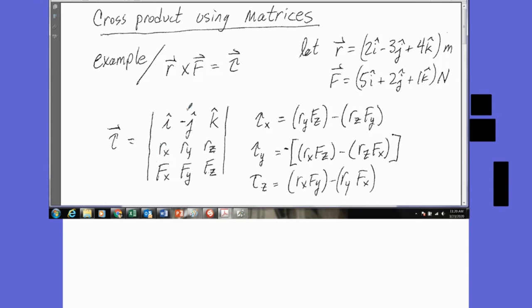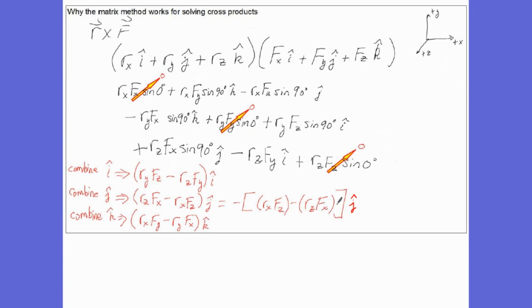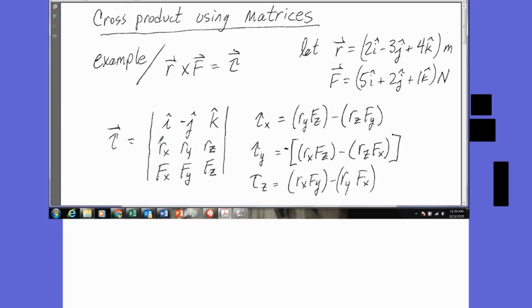The second row is the first vector of the cross product. And this last row is the second vector of the cross product. Notice we're going to put a negative sign on the J here. And that has to do with this little manipulation we did here. We'll show you why we do that here.